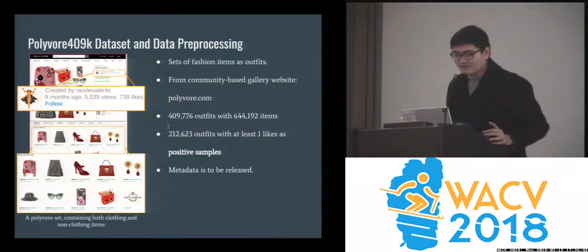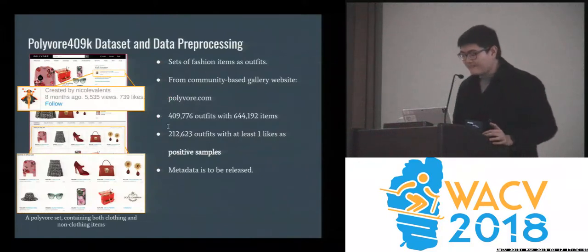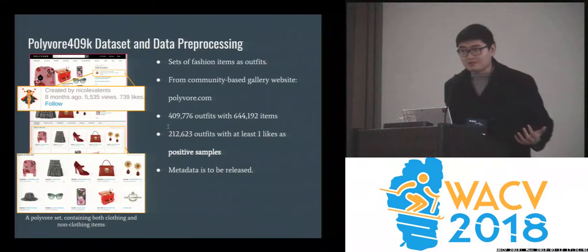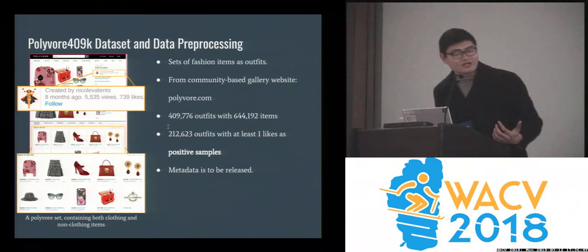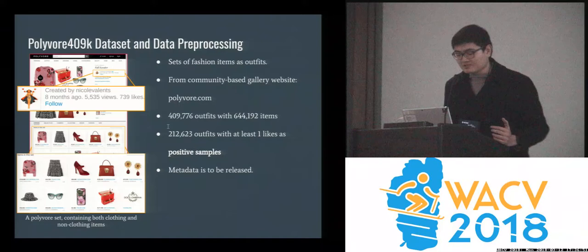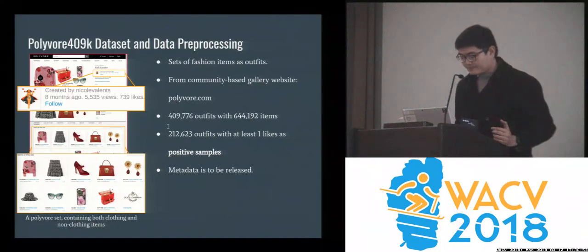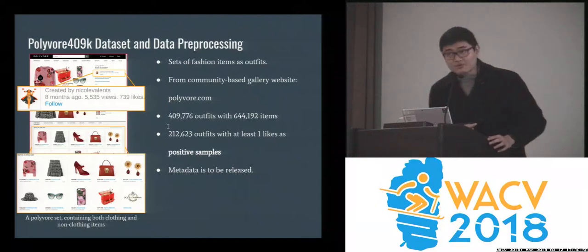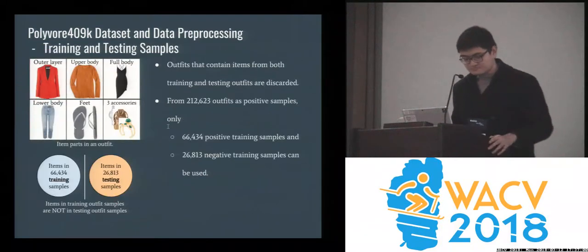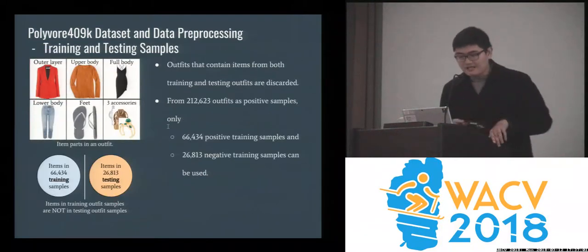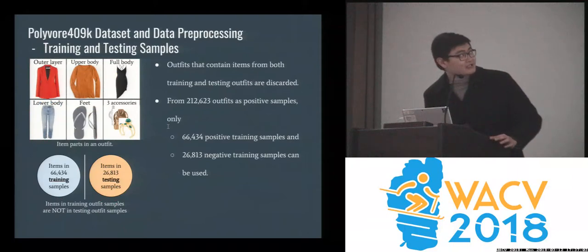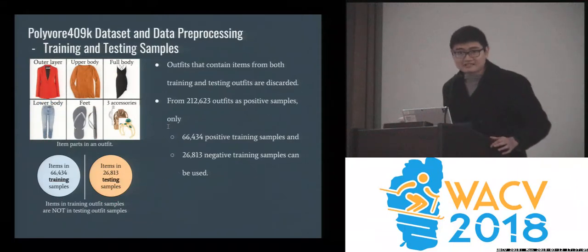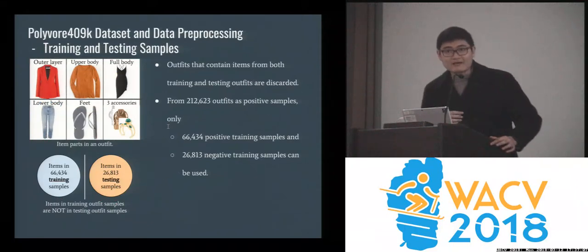Here's the dataset: PoliWall 409K. It is downloaded from PoliWall.com. It's called 409K because it has 409,000 outfits. I use around half of those, which have at least one like, as positive samples. Here's a bit more detail about the dataset.